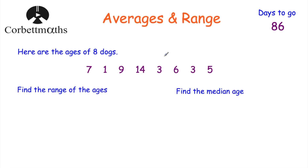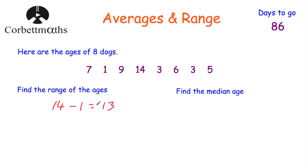Feel free to pause the video now and give this next question a try yourself. The first part says find the range of the ages. The oldest dog is 14 years old and the youngest is 1 year old. 14 take away 1 equals 13. So the range of the ages is 13.